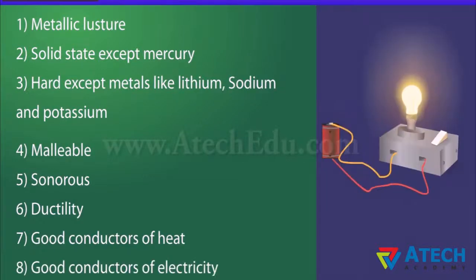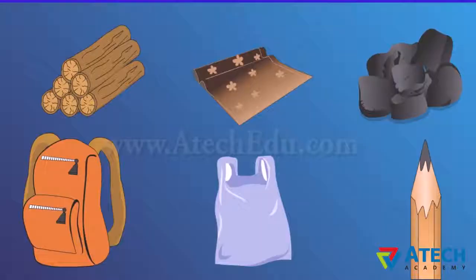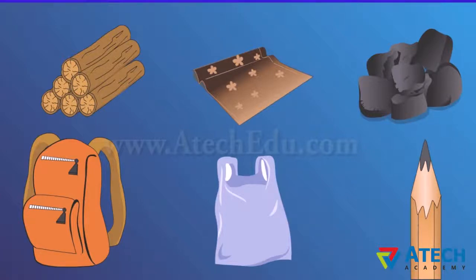Metals are good conductors of electricity. Generally, non-metals show properties which are opposite to metals. However, iodine, though a non-metal, is lustrous. Most non-metals are non-lustrous.